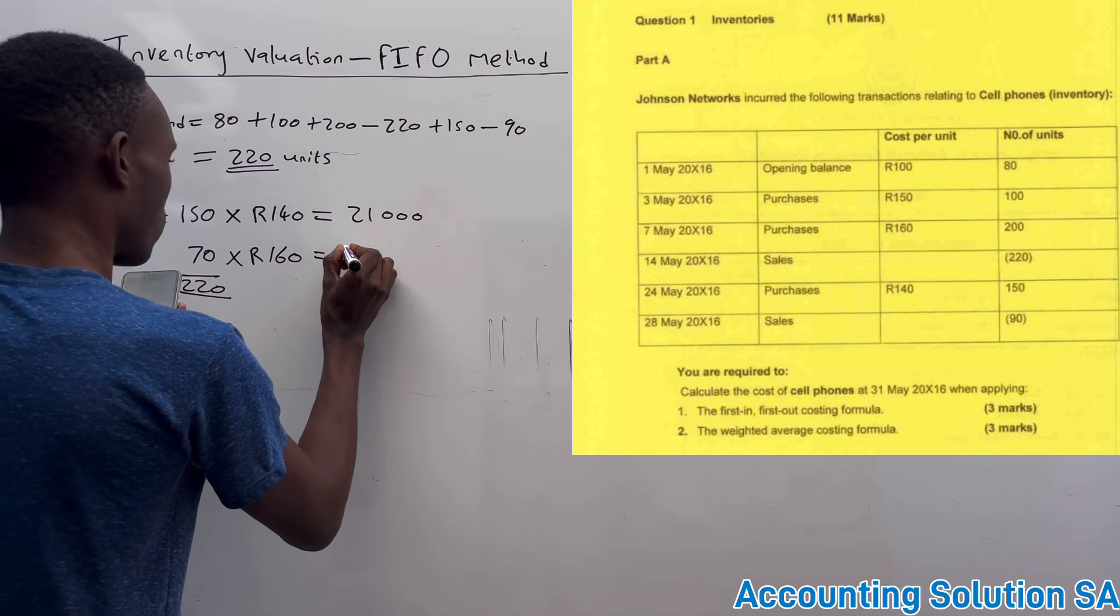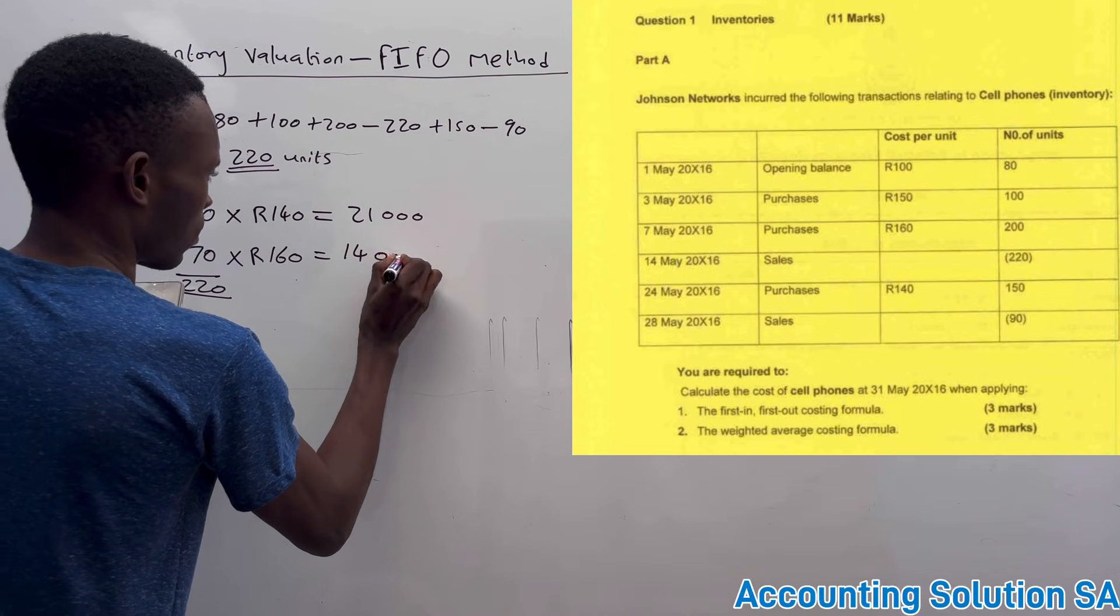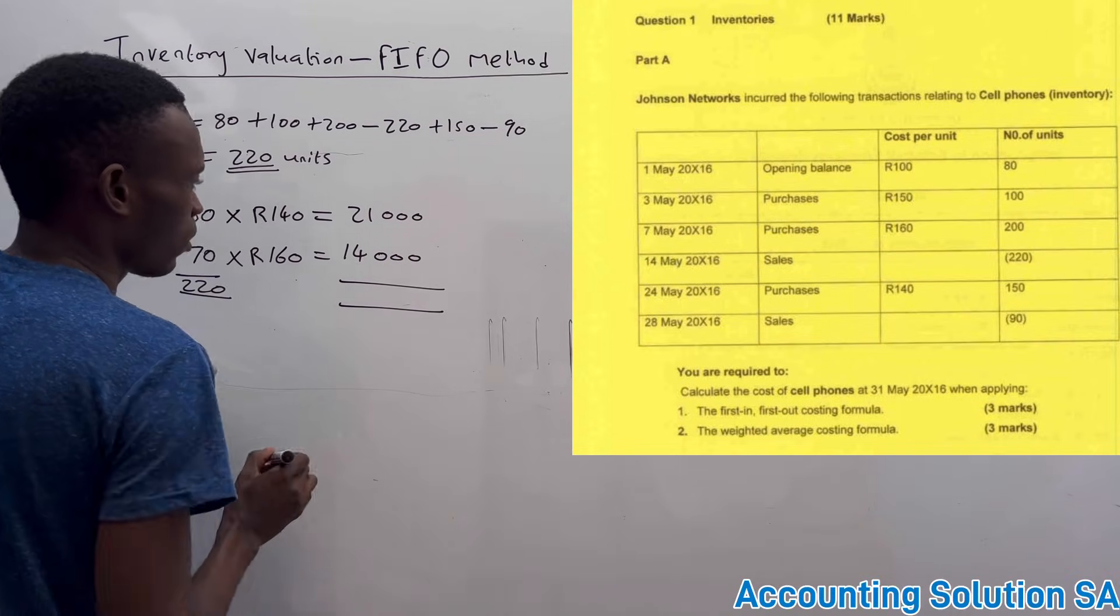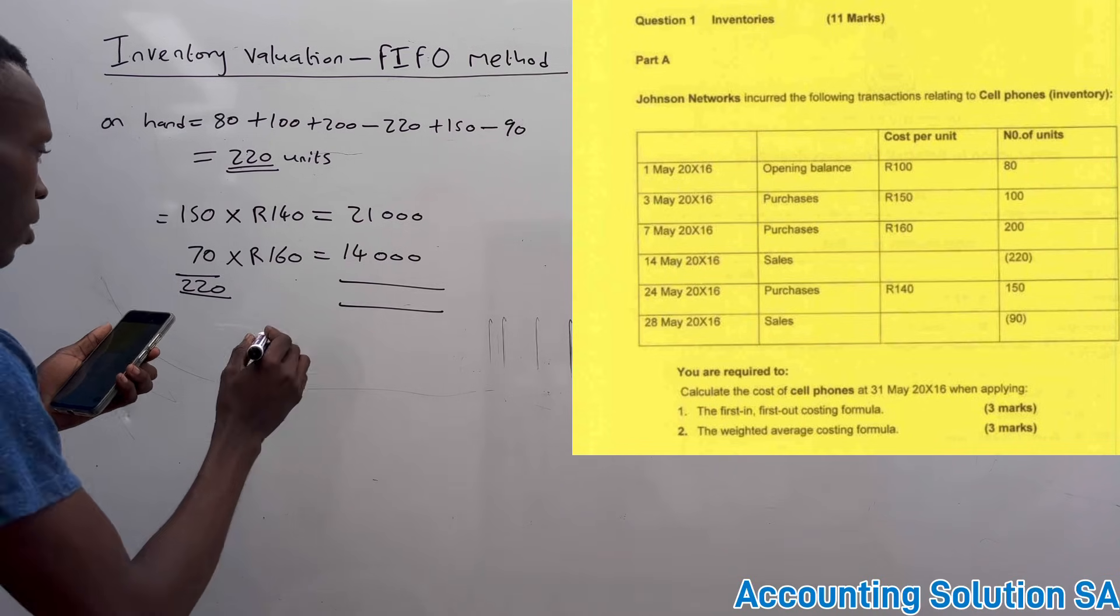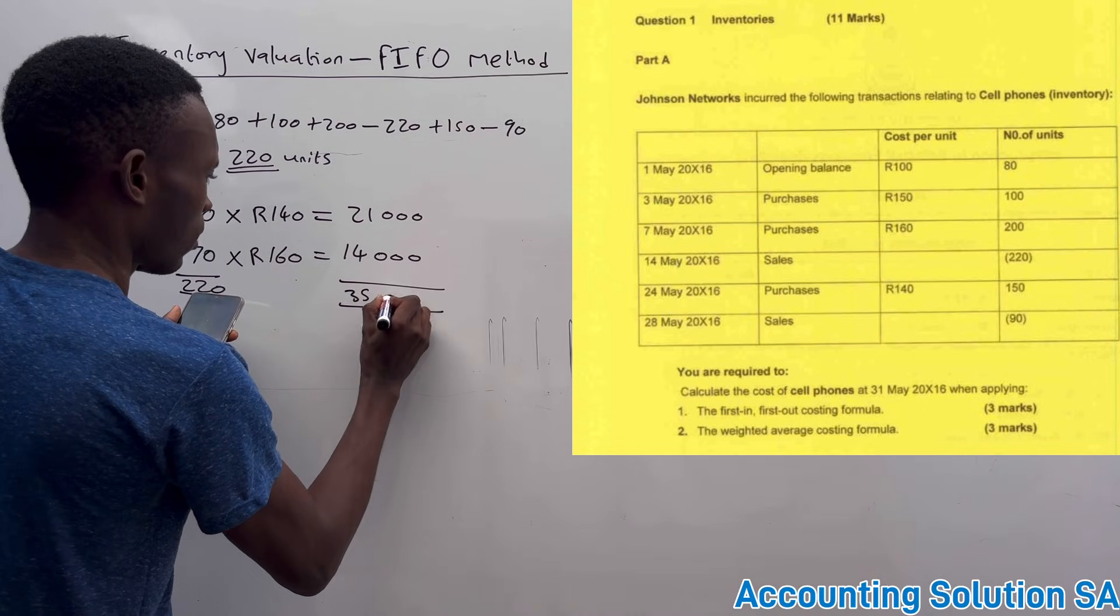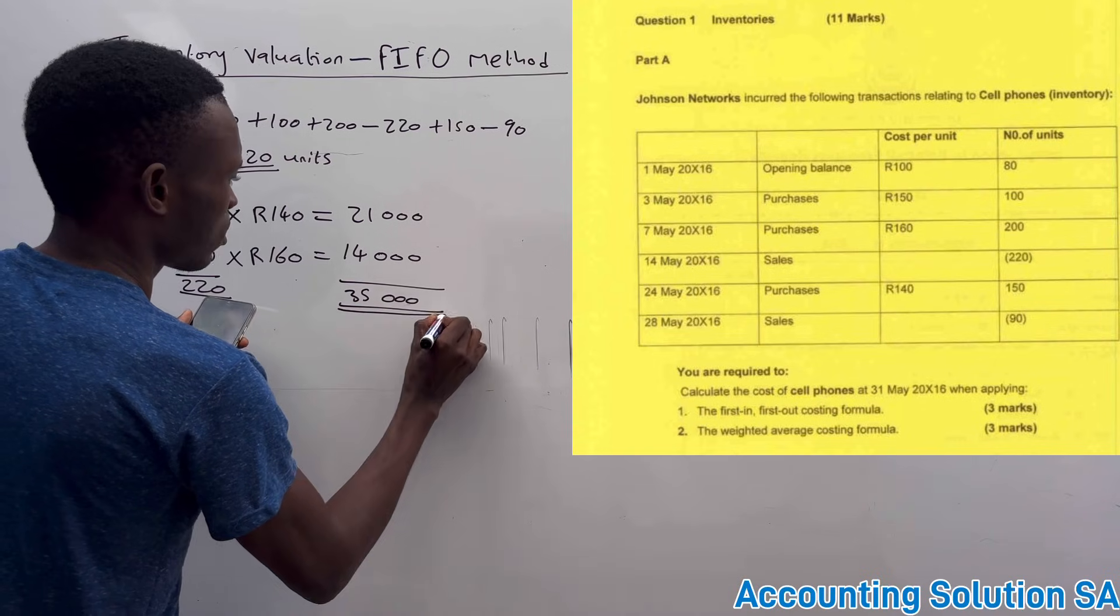Then total you are going to get an amount of R35,000. That's the answer that you are going to get under inventory valuation of First In First Out method.